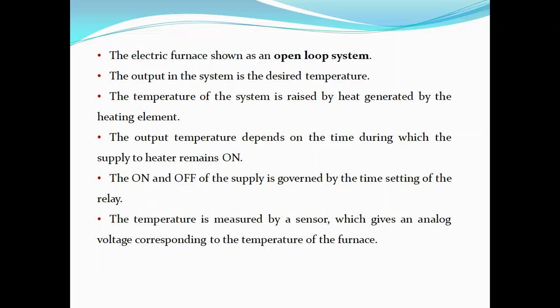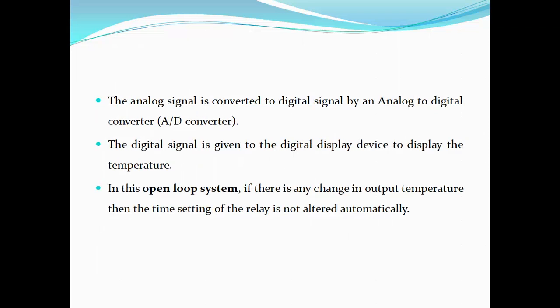The temperature is measured by a sensor which gives an analog voltage corresponding to the temperature of the furnace. The analog signal is converted by an A2D converter, and the digital signal is given to a digital display device to display the temperature. In this system, if there is any change in output temperature, the time setting of the relay is not altered automatically.